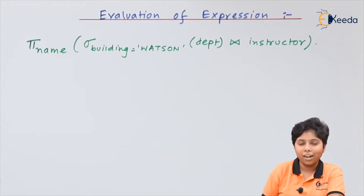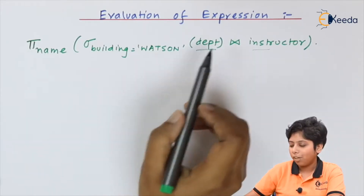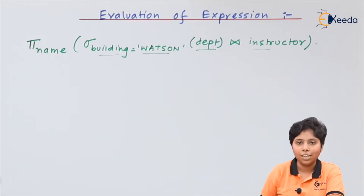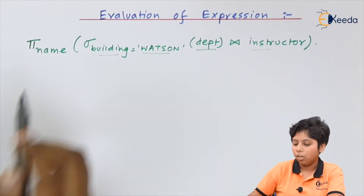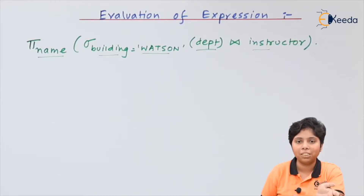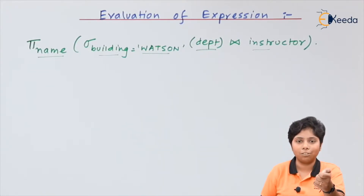In this query, we first perform a join on department and instructor, then fetch the instructors based on which building belongs to Watson, and from that result we fetch the name — that is, the name of the department which belongs to the Watson building — along with the join on building, department, and instructor.